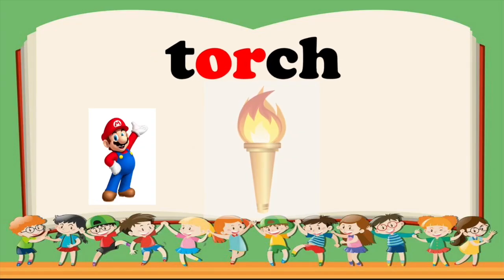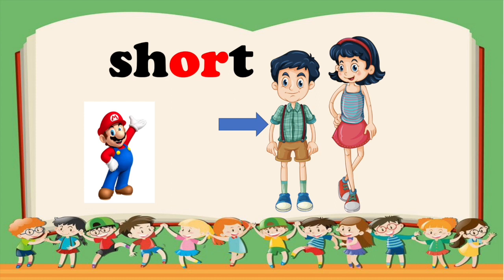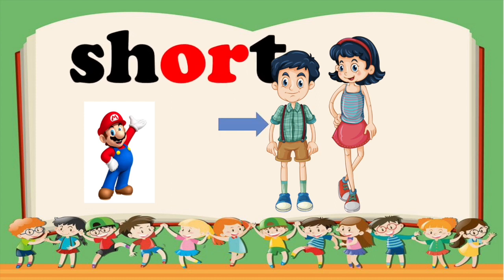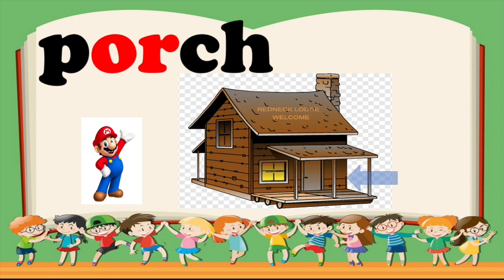All right, we have some more words. T-OR — Torch. Torch. Your turn. And you're right. Let's go to the next word. We have SH-OR — Short. Short. Your turn. Very good. Next word: OR — Porch. Porch. Your turn. Well done.